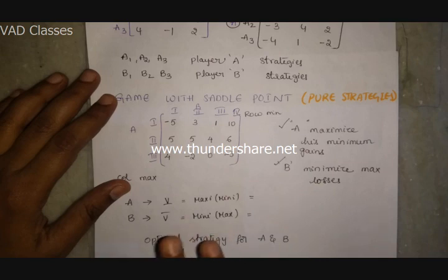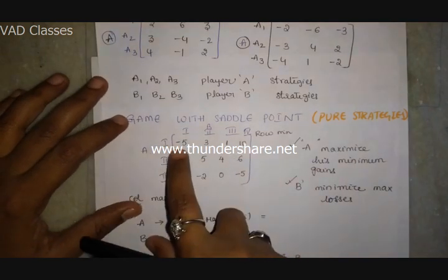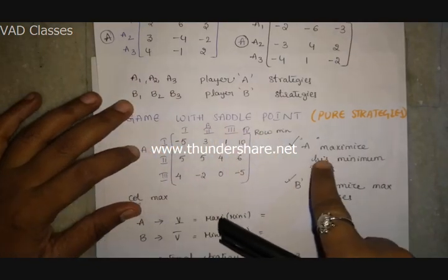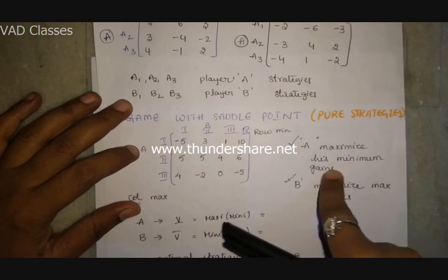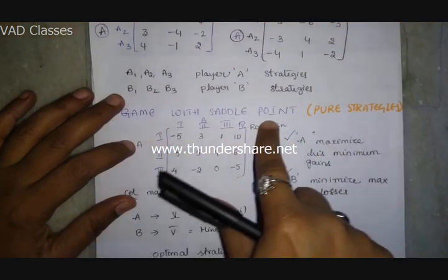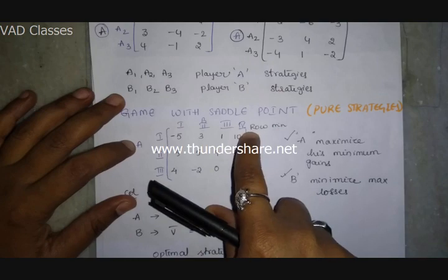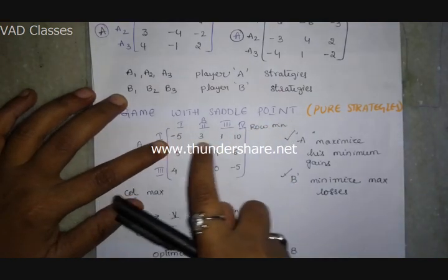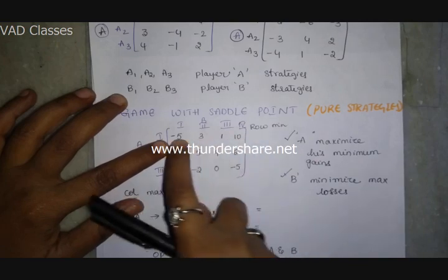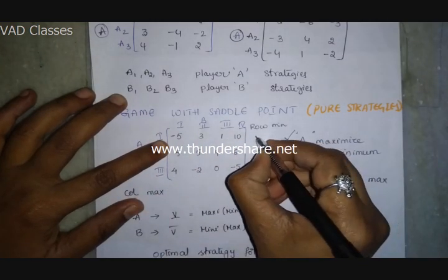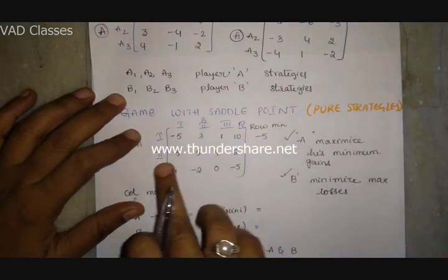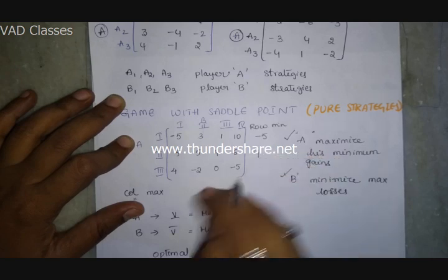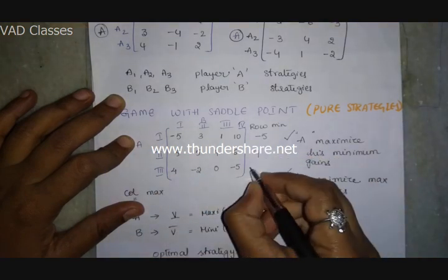For player A, he always wants to maximize his minimum gains. So first we find the row minimums. The first row minimum is minus five, the second row minimum is four, and the third row minimum is minus five.